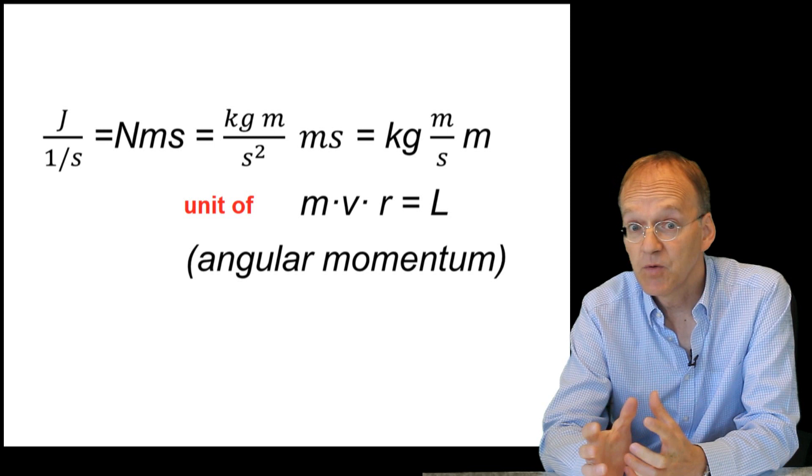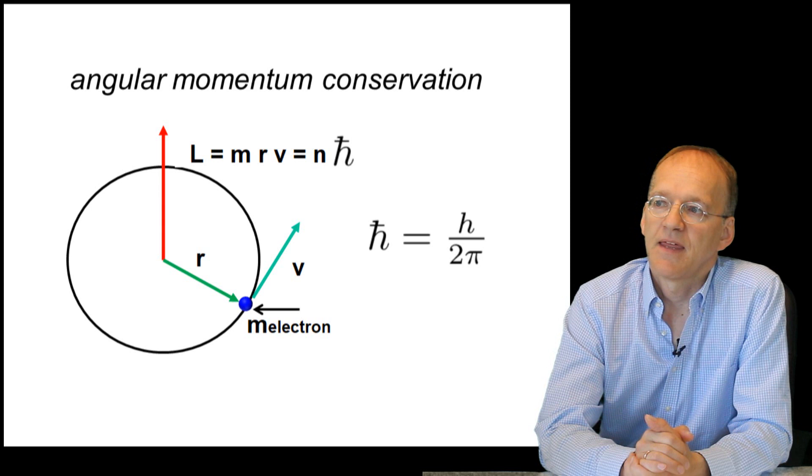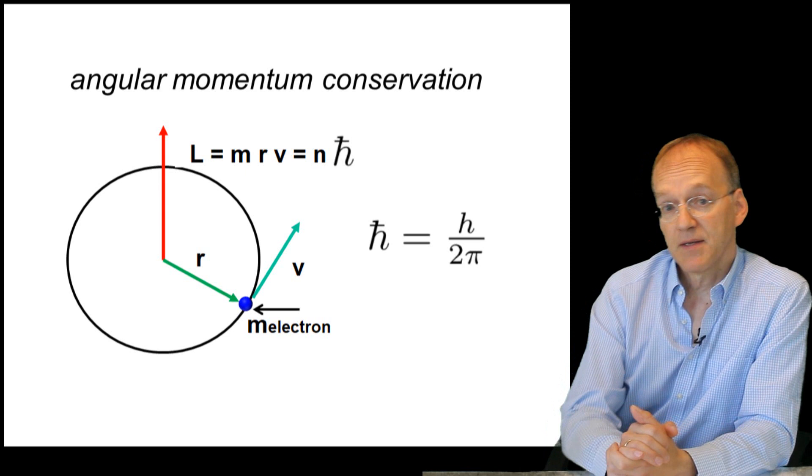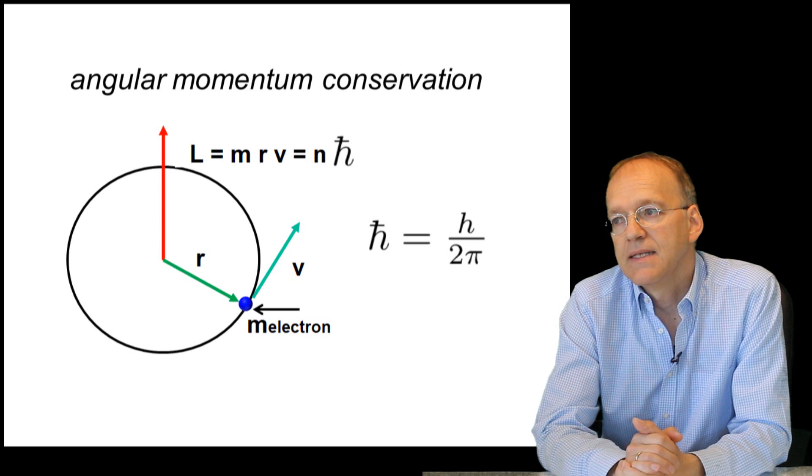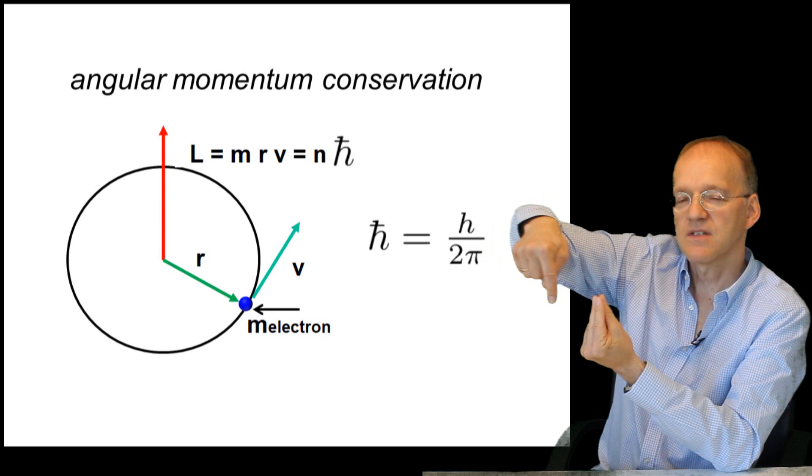And this was the key for developing his model. Also, the mathematician John William Nicholson had expressed the idea, but it was Niels Bohr who first understood that electrons orbiting the nucleus always carry multiples of h-bar as angular momentum. And this was huge because for the first time you could see a reason why these electrons were allowed to stay only at a certain distance from the nucleus.